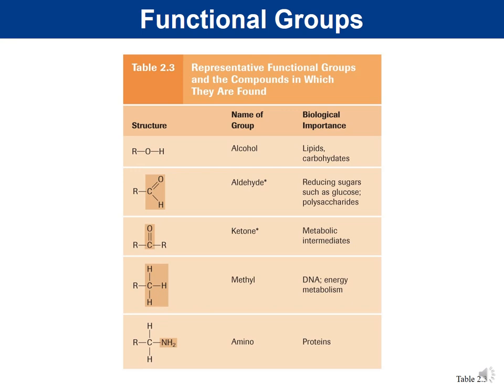The hydroxyl group consists of an oxygen and hydrogen (–OH) attached to the carbon skeleton. Having hydroxyl groups makes molecules an alcohol. Examples include certain lipids and carbohydrates — glucose, for example, has hydroxyl groups throughout its structure.